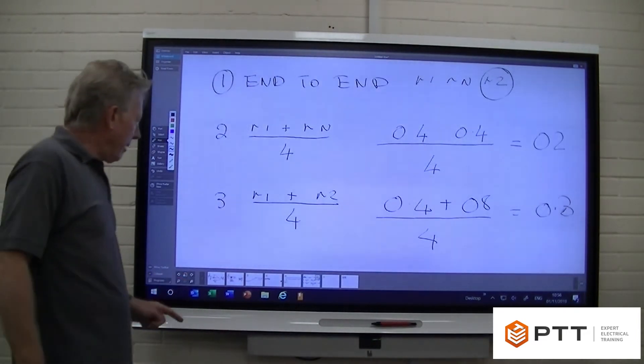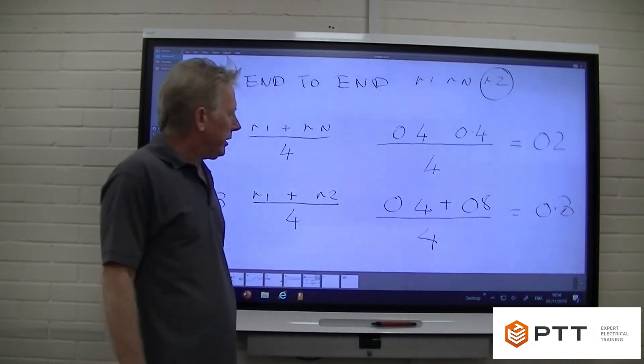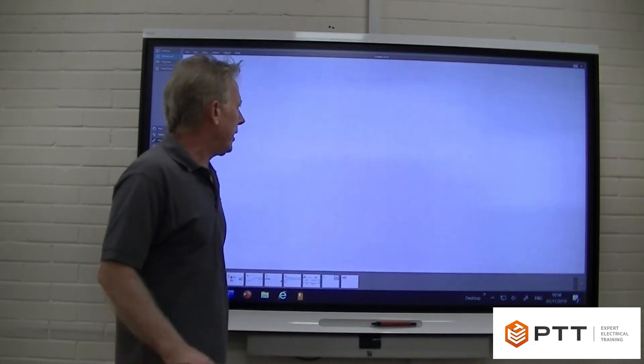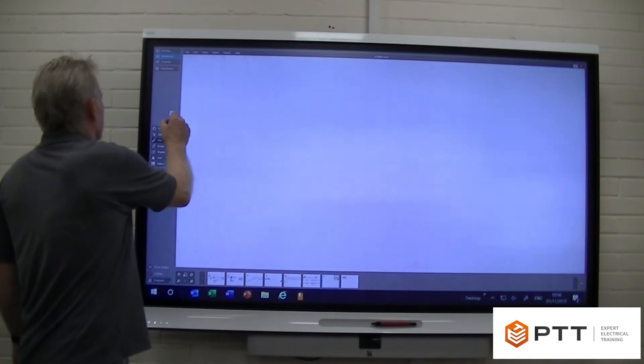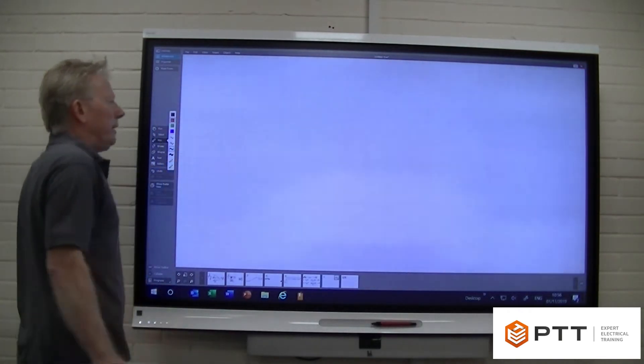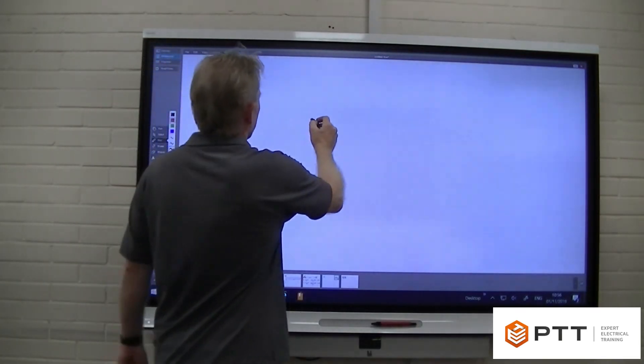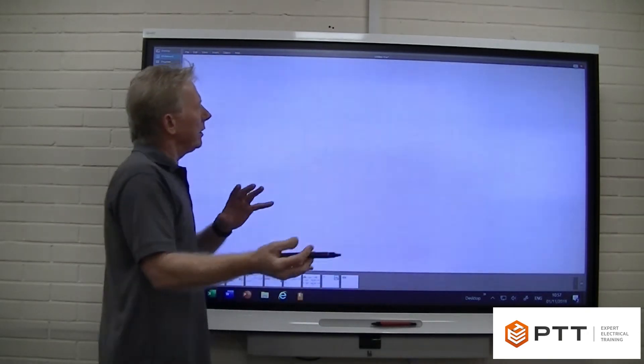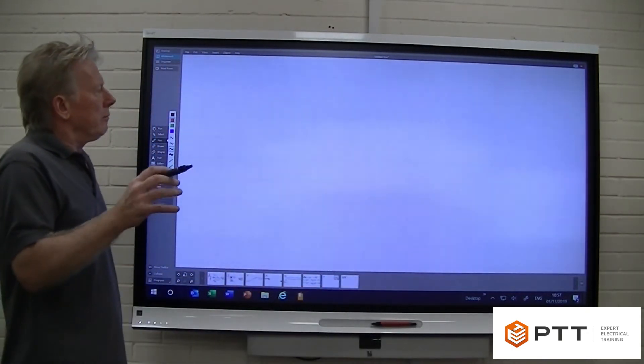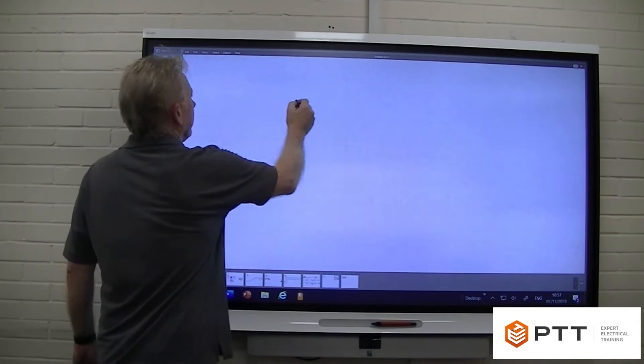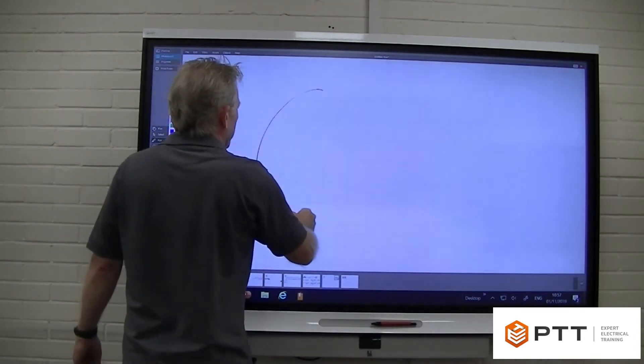So those are the tests. But I wanted us to examine what we're actually doing with the cross connection. What we want to do is what we call a figure-of-eight cross connection, because it's the only way of measuring the ring. So let's have a look at what we're trying to achieve here.